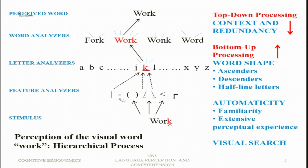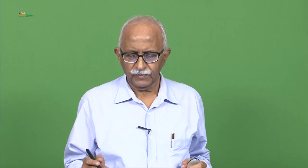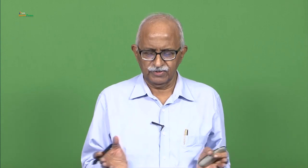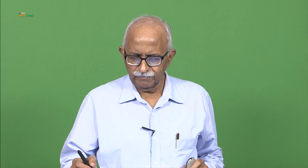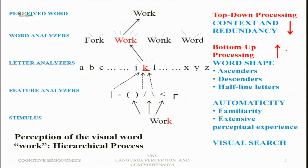The letter analyzer for 'k' makes a high intensity signal, and then the word analyzer identifies 'work'. This is the bottom-up process: from stimulus to feature analysis, to letter analysis, to word analyzer, and finally to the word. In the top-down process, context and redundancy play an important role. Redundancy means we use more channels or more words to convey smaller information. Bottom-up processes go from bottom to top; top-down processes go from top to bottom.